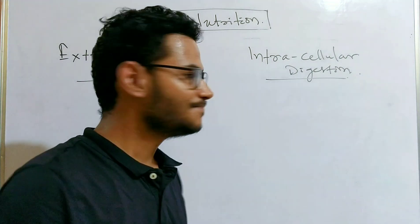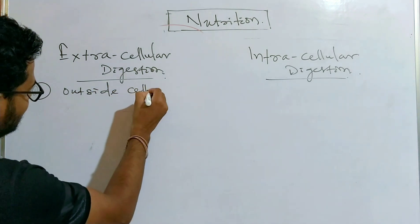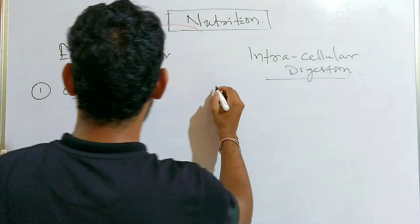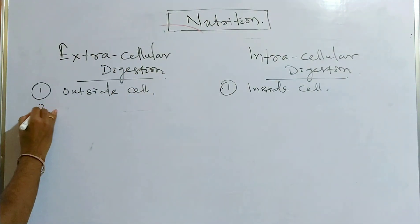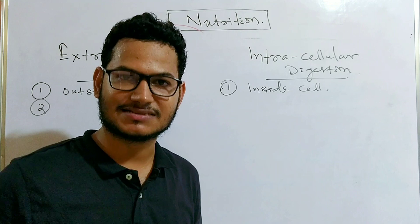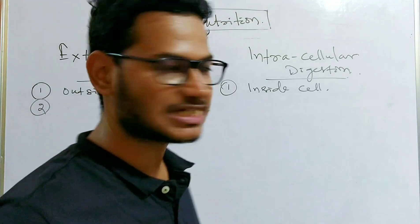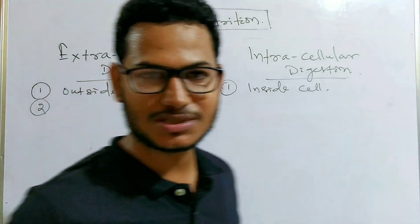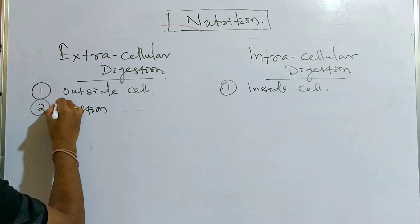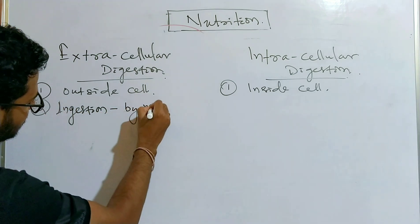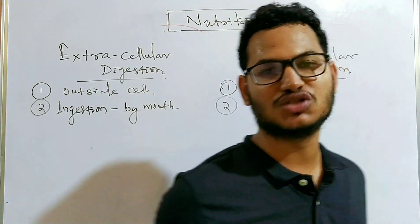Comparing extracellular and intracellular digestion: In extracellular digestion, the process occurs outside cells, while in intracellular digestion it occurs inside the cell. In extracellular digestion, ingestion of food takes place through a particular aperture called the mouth. In intracellular digestion, food enters the cell through certain pores present in the plasma membrane.